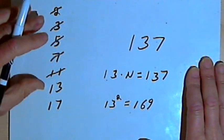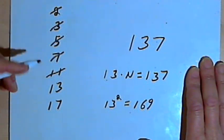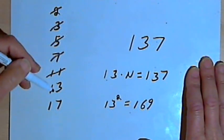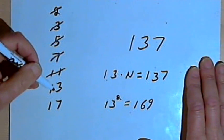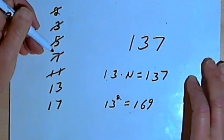So using those two ways of limiting your list, using only prime numbers and stopping when you get to a number whose square is bigger than the number you're checking, should make the process go a lot faster.